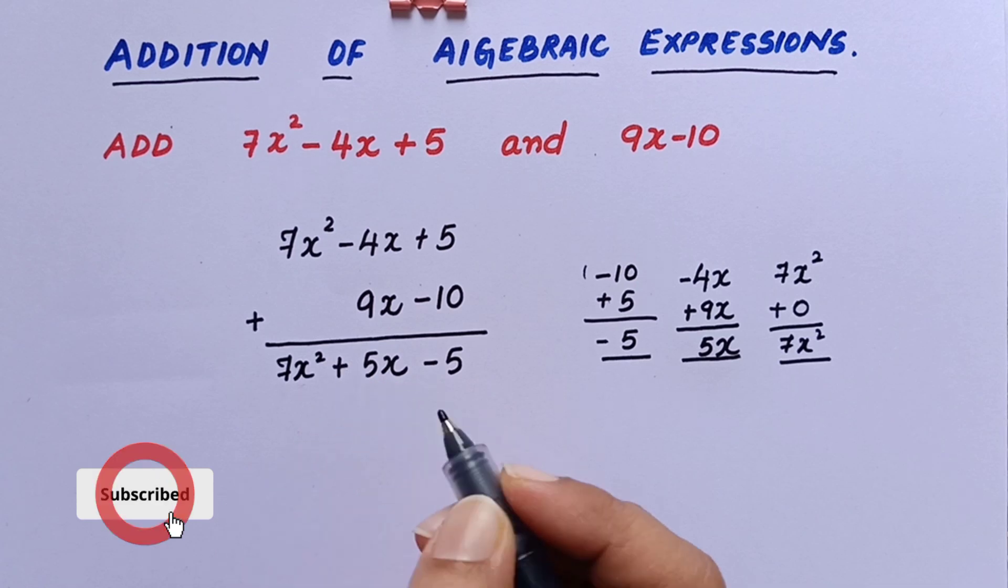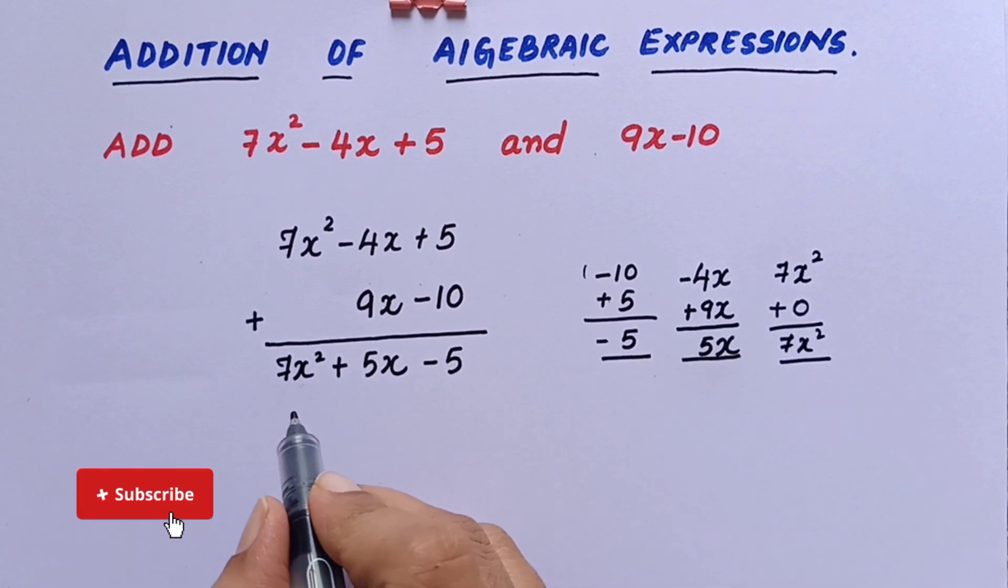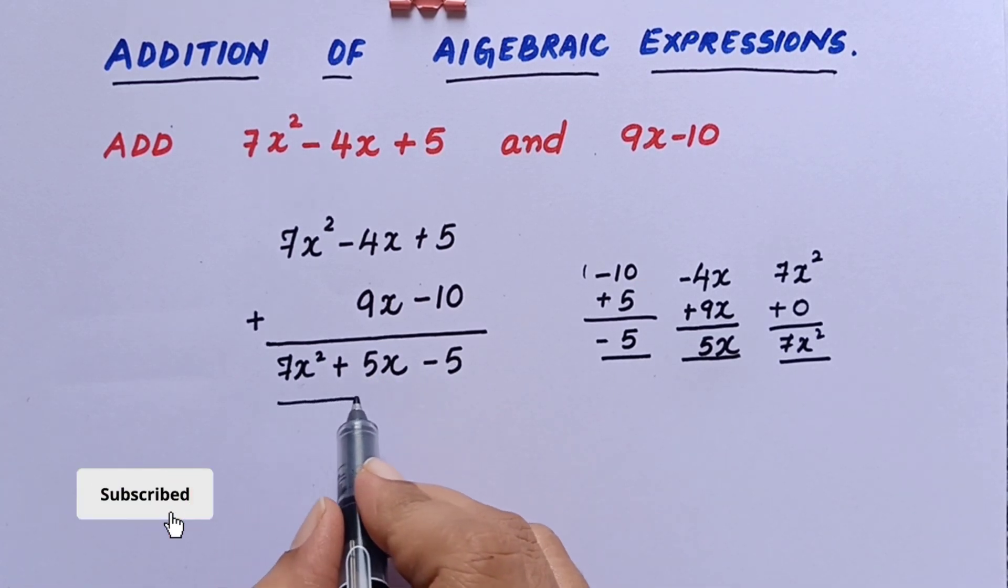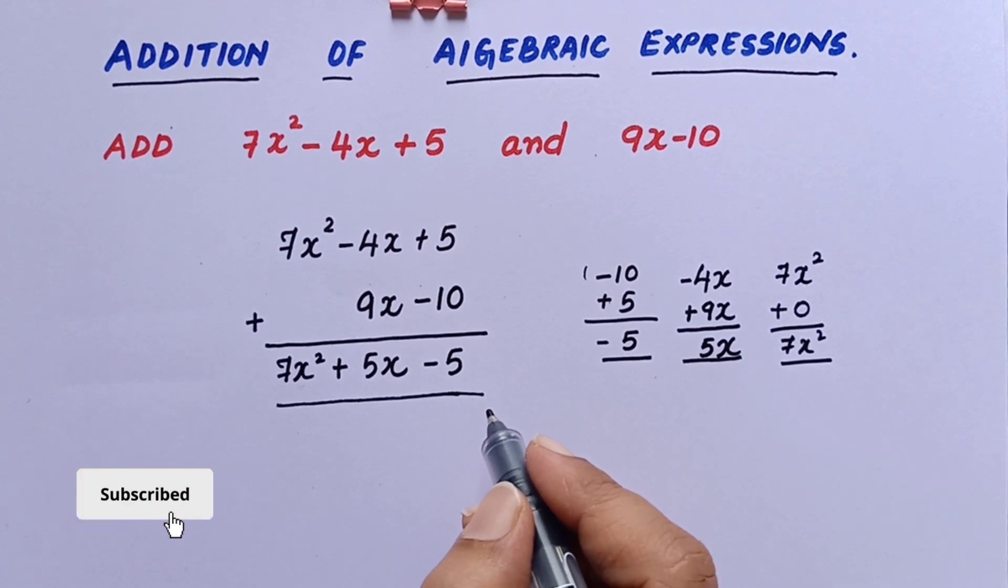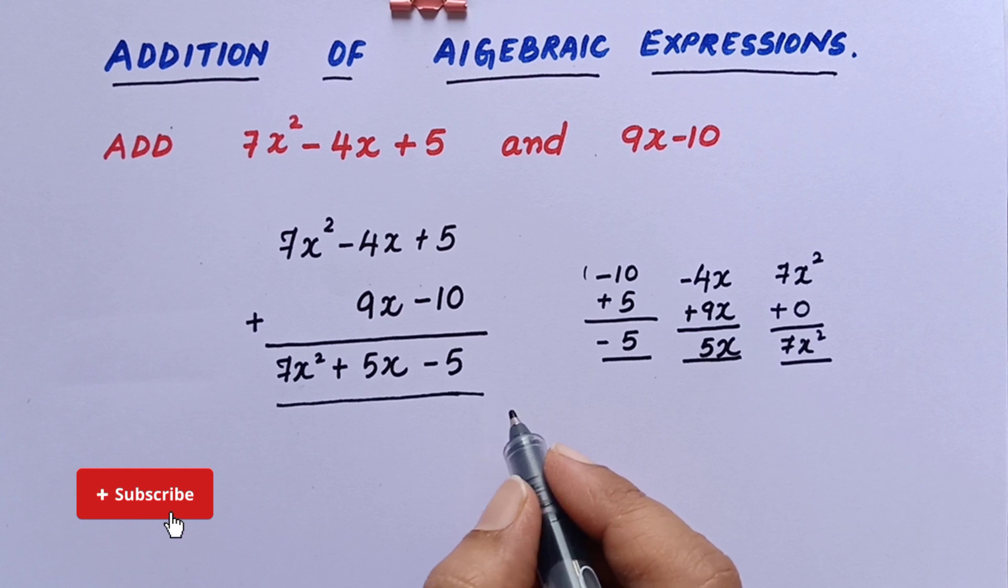And here is the solution. So this is the expression what we get after adding these two expressions given in the question. That is 7x² + 5x - 5. I hope you have understood.